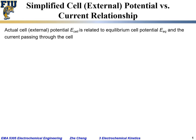When we put the galvanic cell and electrolytic cell together, we will see that the actual cell potential, which we call E_cell, is related to the equilibrium cell potential, E_eq, as well as the current passing through the cell and the so-called cell internal resistance.